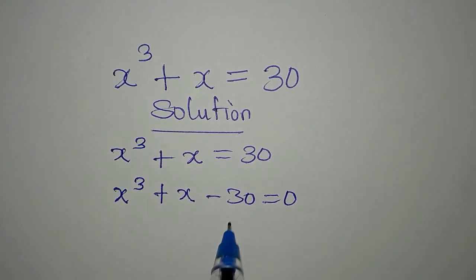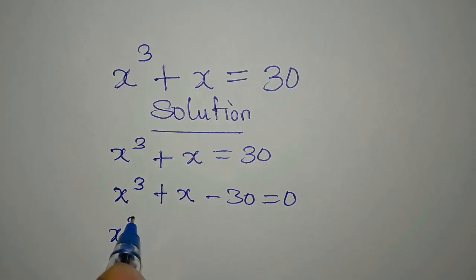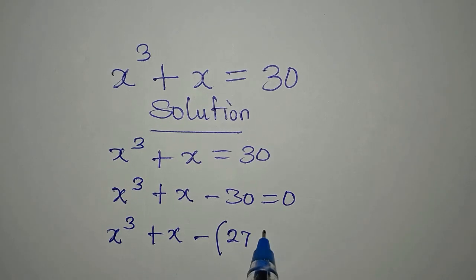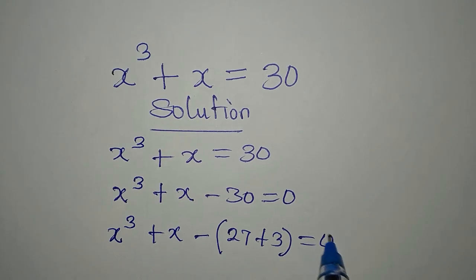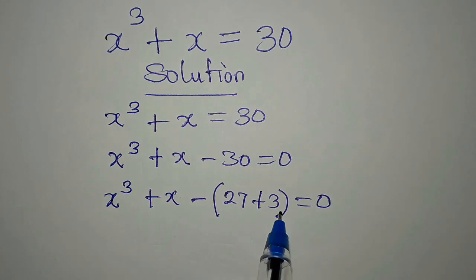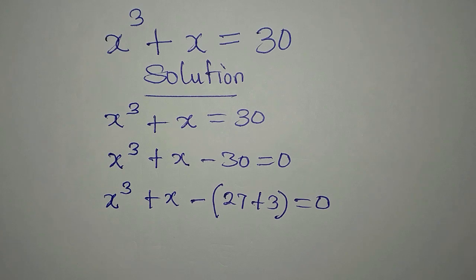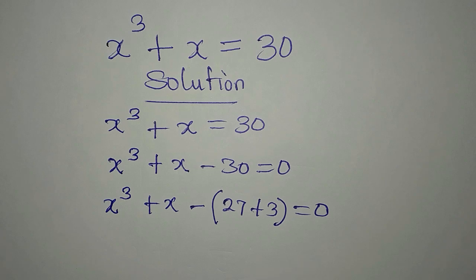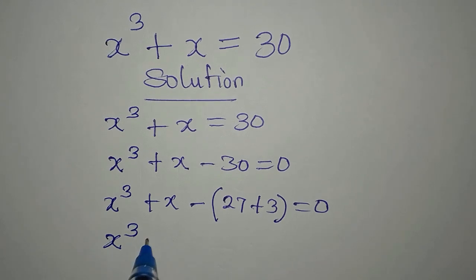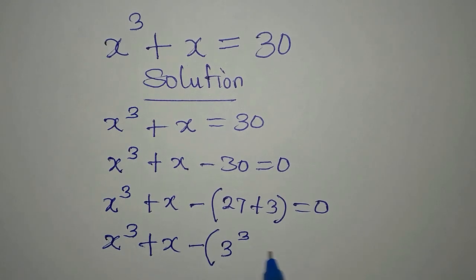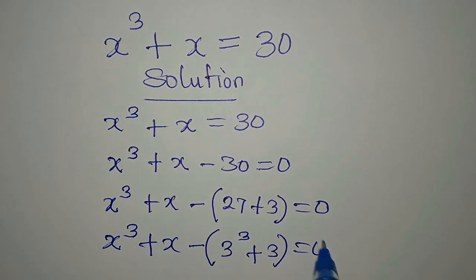Now, what if I try to write 30 in this form? We'll have x to the power of 3 plus x minus open bracket — 30 is 27 plus 3 — equals zero. I'm going to use this because I can write 27 as 3 to the power of 3, and 3 will be there for x. So we have x to the power of 3 plus x minus open bracket 3 to the power of 3 plus 3 equals zero.